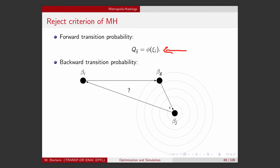And now, assuming that I am at beta_j, what is the probability that my Markov process sends me back to beta_i? So this is what I need to calculate, Q_ji, the probability that I go back to the original state.